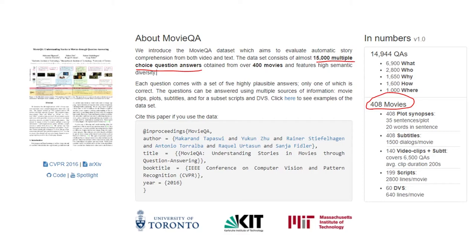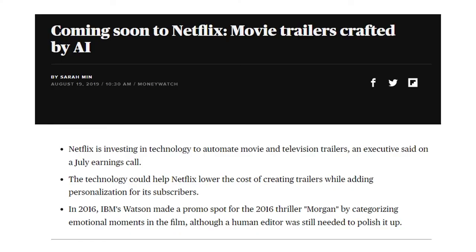But the problem with such a system was it was only tailor-made, only trained for such a movie, and it was very difficult to replicate it to a different movie. Later, in 2019, Netflix came out and they said they are also working on this AI to make movie trailers.